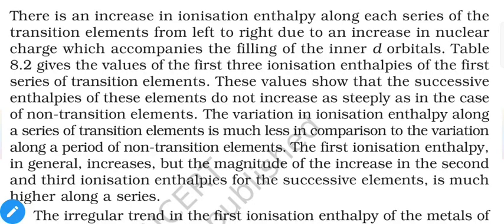The simple reason is that transition elements are metallic elements, so they have comparatively less attraction towards their electrons and can release electrons more easily. On the other side, p-block elements are mostly non-metallic or semi-metallic, especially in the upper part of the periodic table, so they have comparatively more affinity or attraction towards electrons.